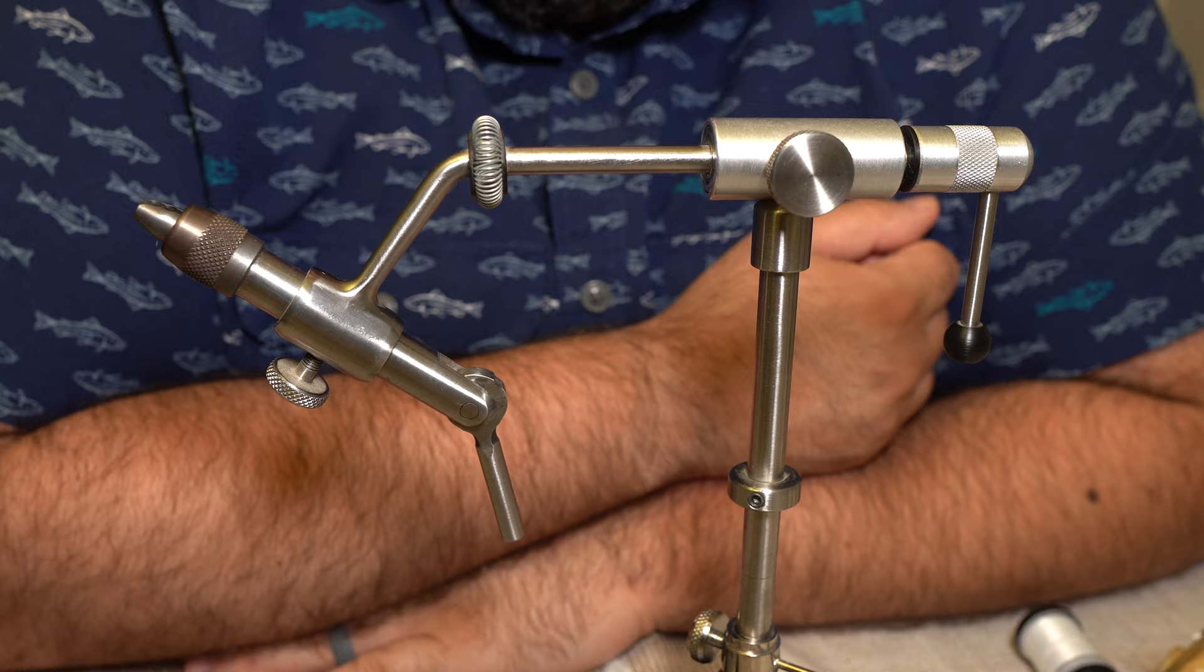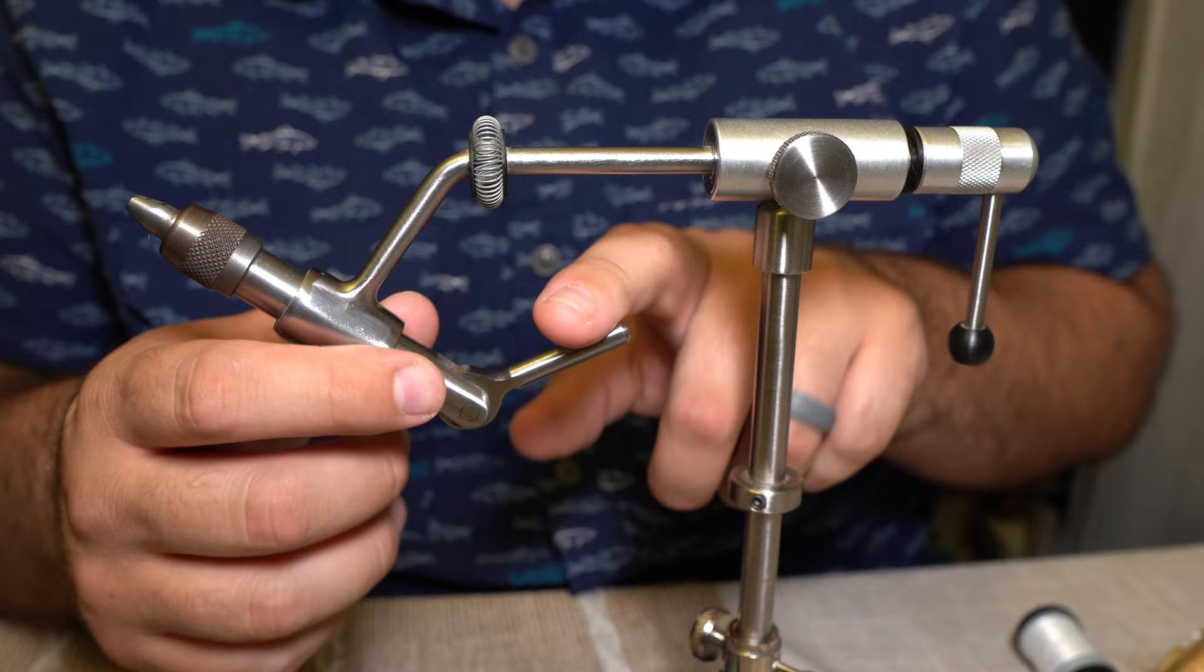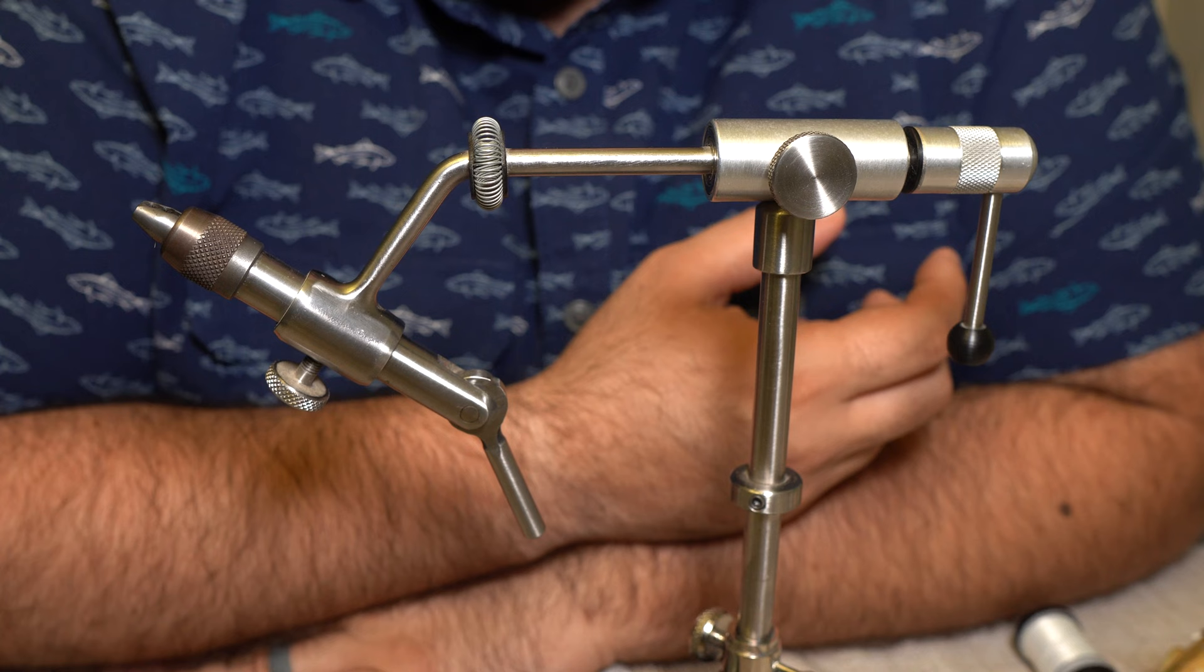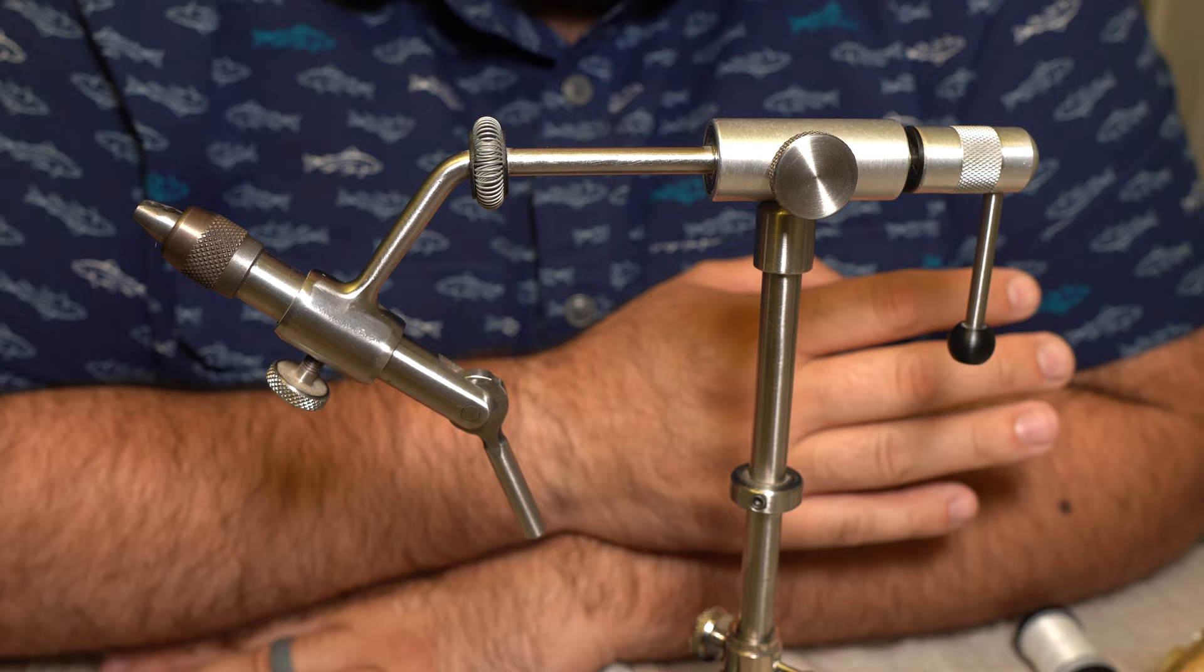It also has a detent lock right there for when you close the vise. Gives you a really nice, satisfying click. That is, that might be my favorite part of it. I just, I want a vise that is going to open and close sharply and smartly like this does.